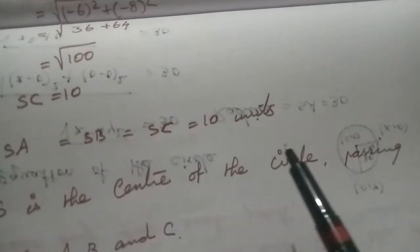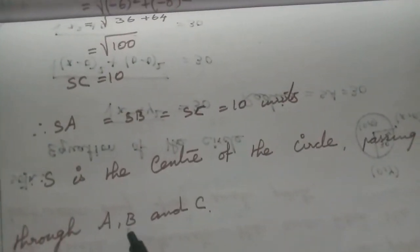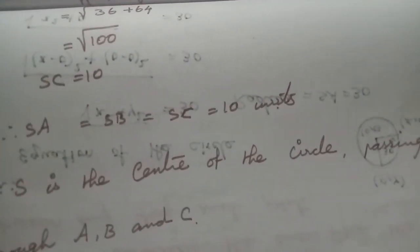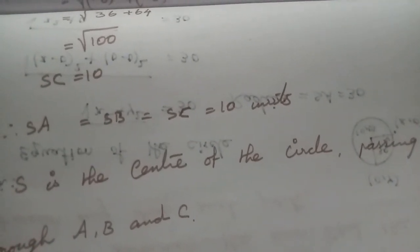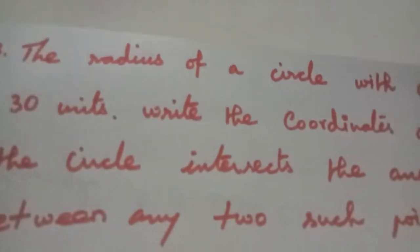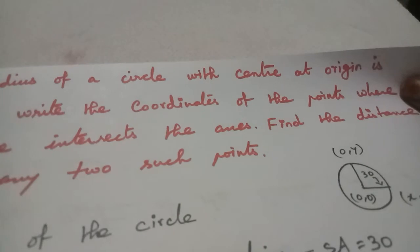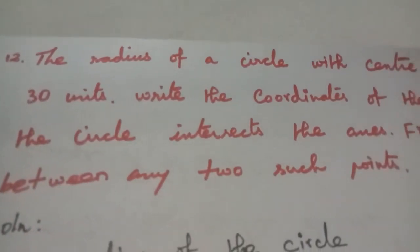Therefore S is the center of the circle passing through the points A, B, and C. This circle has center S(11,2) and radius 30 units.